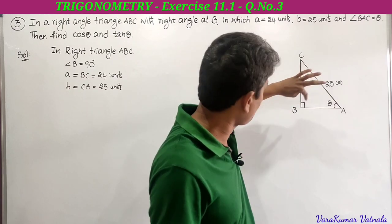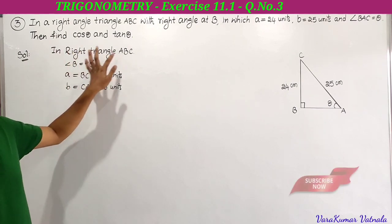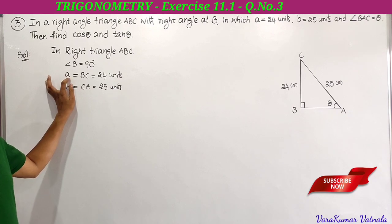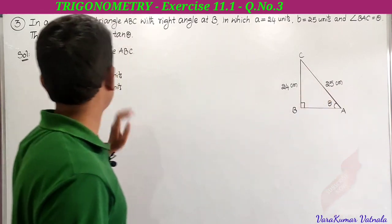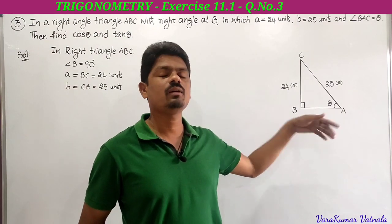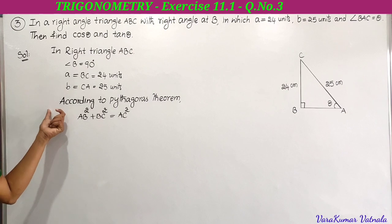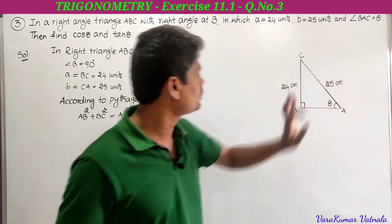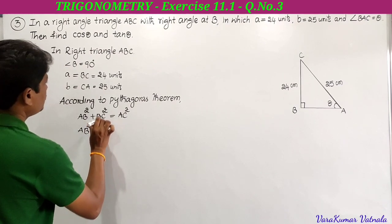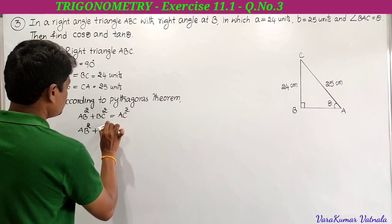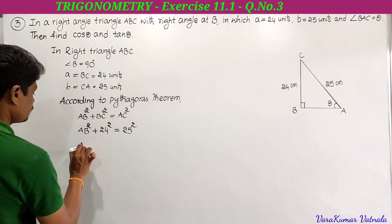In right angle triangle ABC, angle B equals 90 degrees. BC equals 24 units, CA equals 25 units. We need to find AB. According to Pythagoras theorem, AB square plus BC square equals AC square. So AB square plus 24 square equals 25 square.